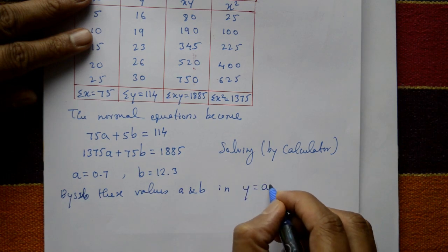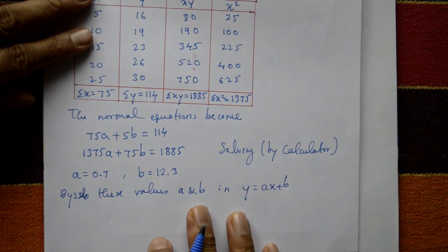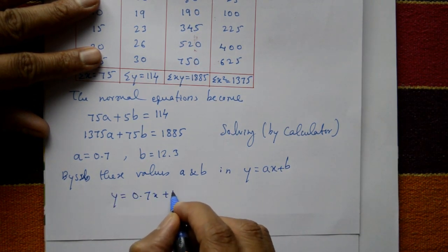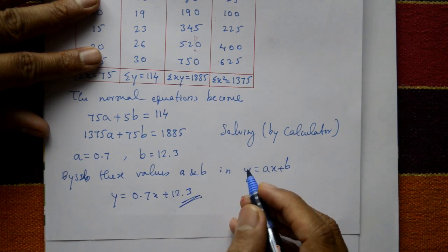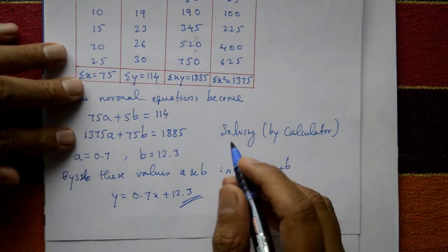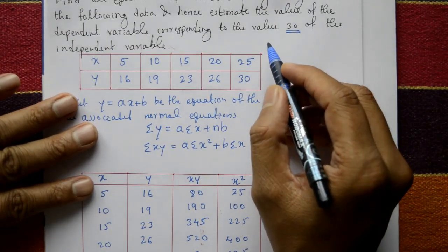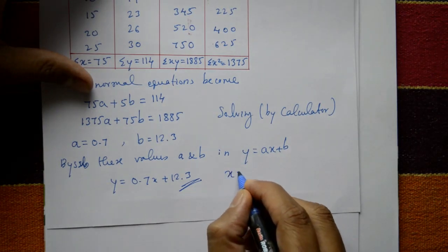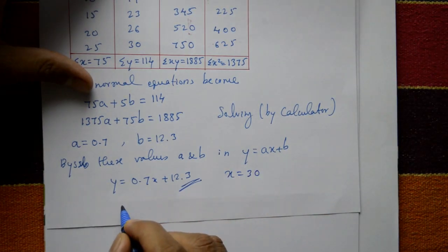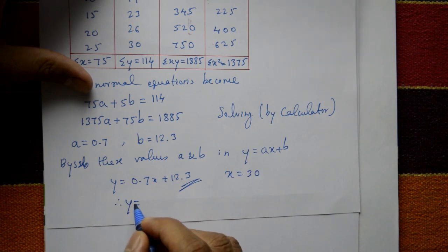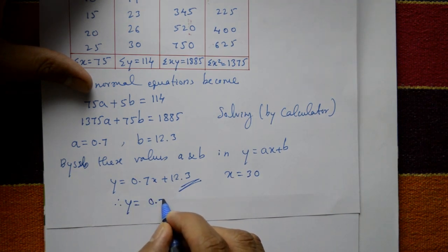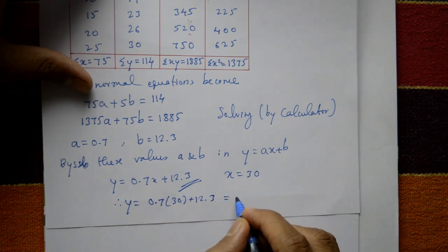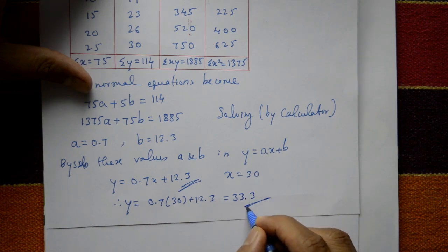The required equation is y = 0.7x + 12.3. To estimate y at x = 30, substitute: y = 0.7 × 30 + 12.3 = 21 + 12.3 = 33.3. So the estimated value of the dependent variable is 33.3.